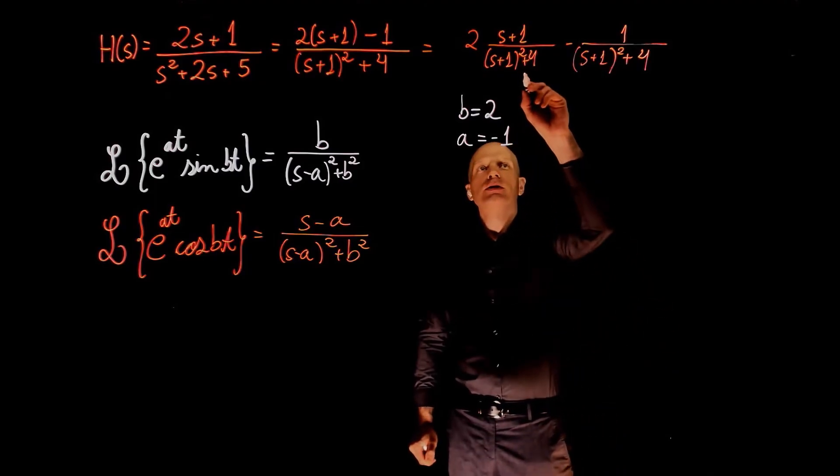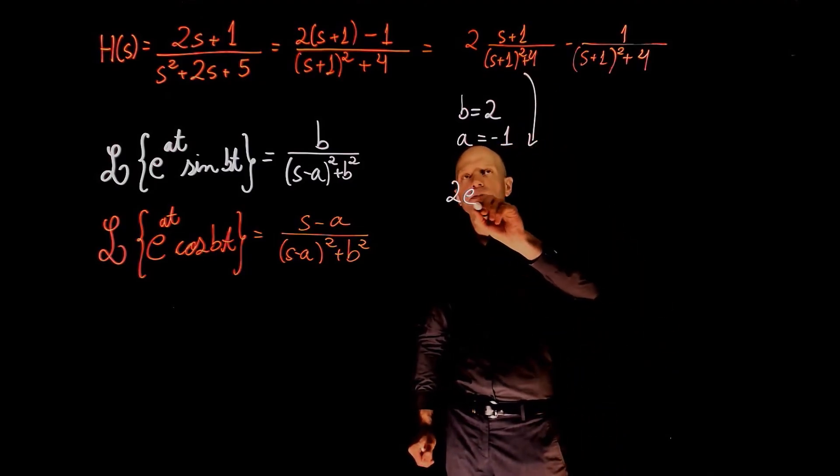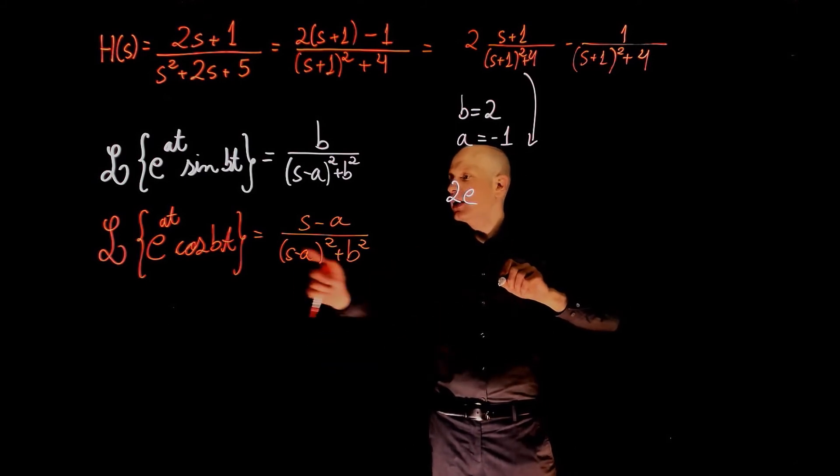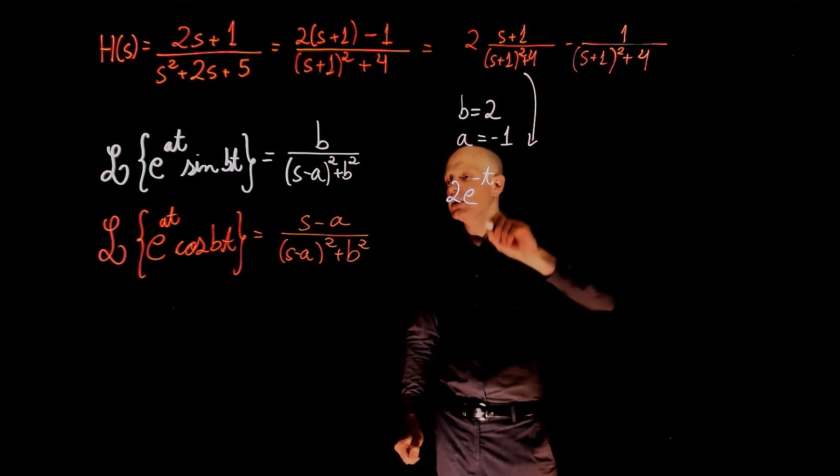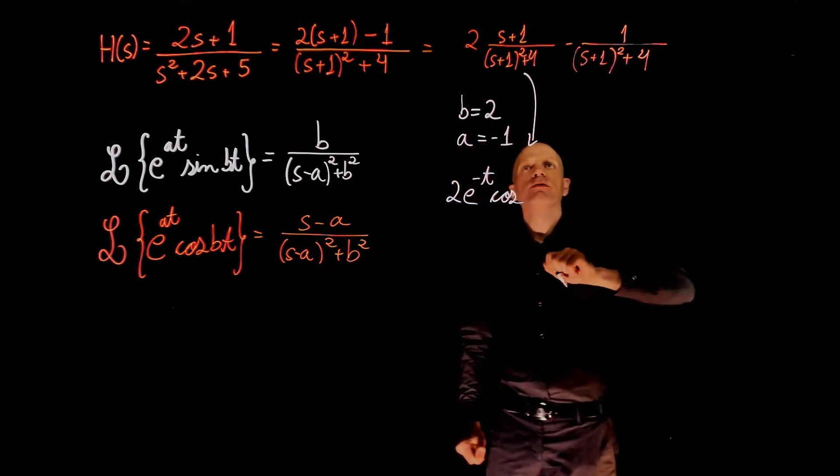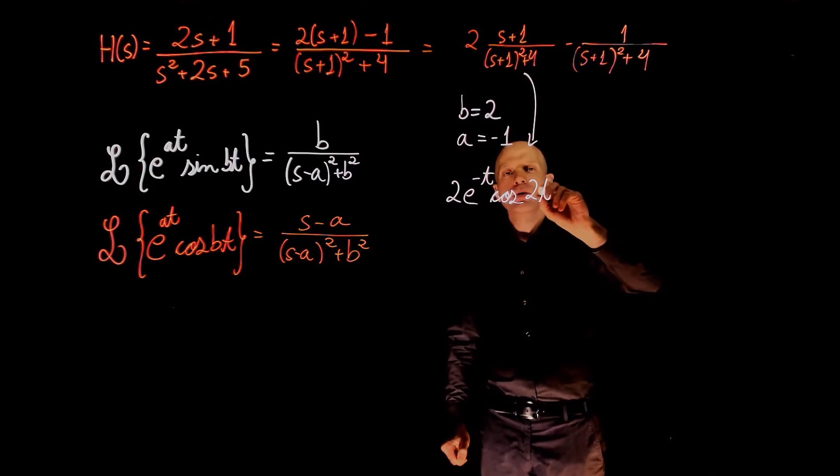This first term now gives 2 exponential of negative a, negative 1, so negative t, cosine of b, t.